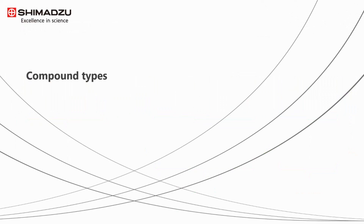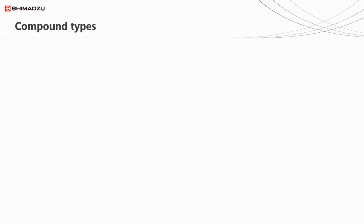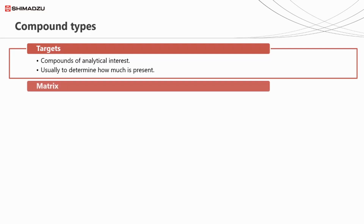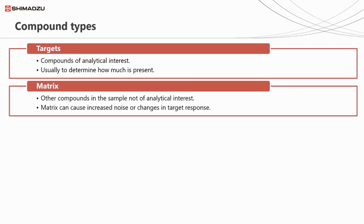Within our samples, standards and QCs, we have a range of different compound types. Of course, we have our target compounds. These are the compounds of analytical interest, and normally we want to know how much of a target is in our sample. The next type of compound, which we've also spoken about previously, is matrix. This is all other components within the sample that are not of analytical interest.